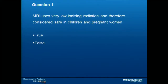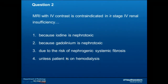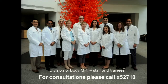Question one: MRI uses very low ionizing radiation and is therefore considered safe in children and pregnant women. The answer is false — MRI does not use any radiation. Question two: MRI with IV contrast is contraindicated in worse than stage IV renal insufficiency because: iodine is nephrotoxic, gadolinium is nephrotoxic, due to risk of nephrogenic systemic fibrosis, or unless the patient is on hemodialysis. The correct answer is three — due to the risk of nephrogenic systemic fibrosis. For any questions related to body MRI or choosing the right scan, please give us a call at extension 52710. Thank you for your attention.